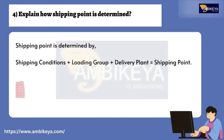Question number four: Explain how shipping point is determined. Shipping point is determined by the combination of Shipping Conditions plus Loading Group plus Delivery Plant, which together equal the Shipping Point.